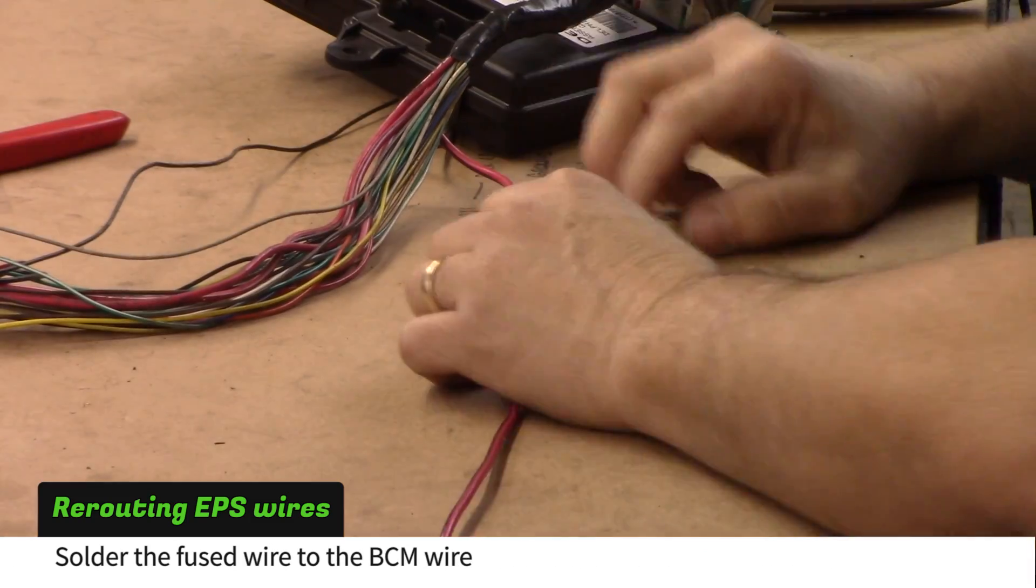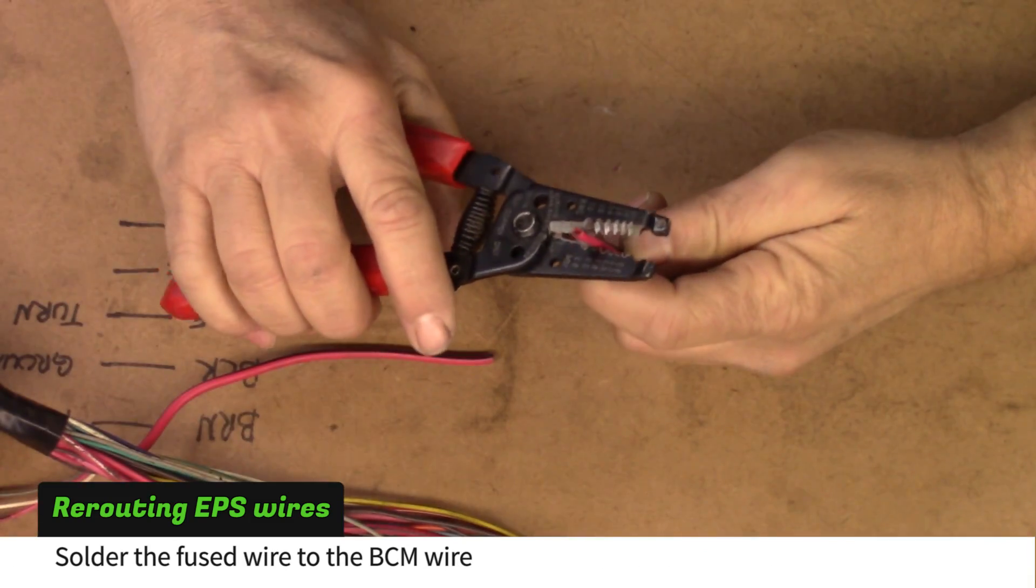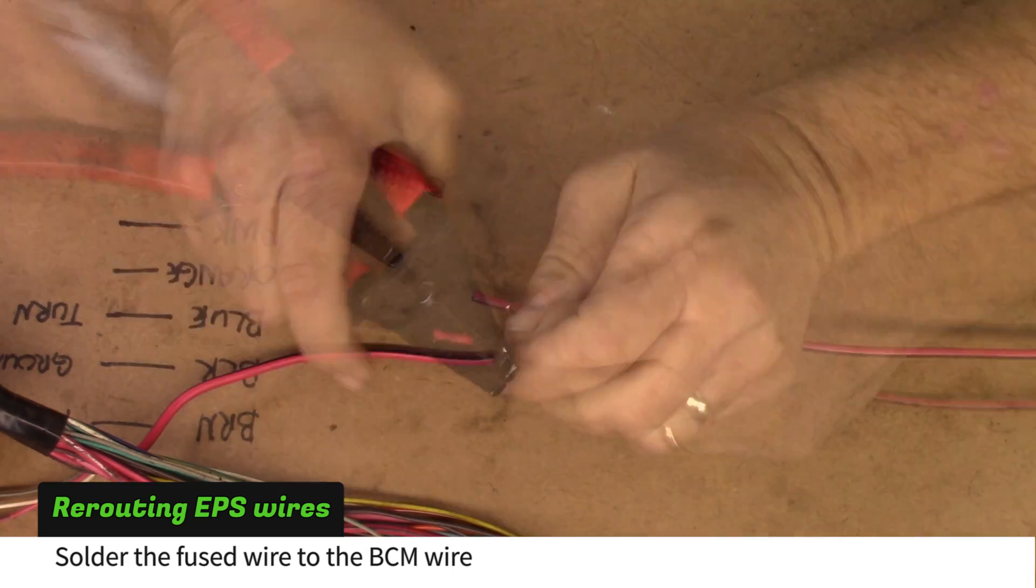Now find the fused BCM power wire that was removed in the last video. Solder the fused wire to the short wire you just cut near the BCM.